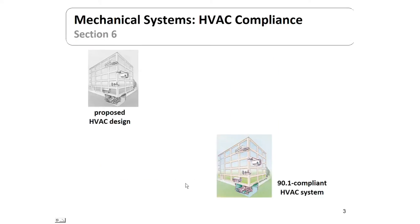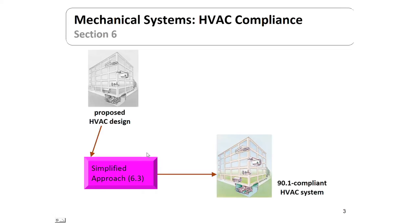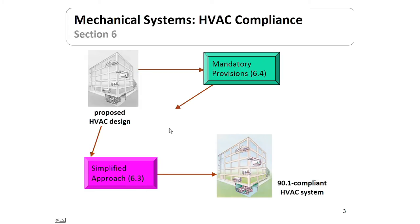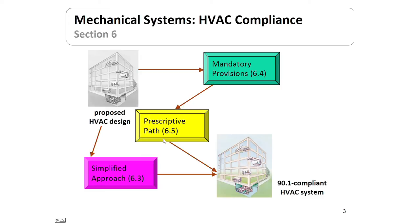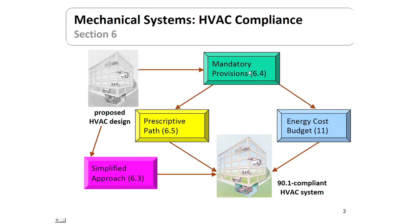The mechanical system compliance may look a little more complex than the others we've gone through. We're trying to get from a proposed design to a 90.1 compliant HVAC system. We can go through a simplified approach, which happens to be section 6.3, or we can take the more complicated route of going through the mandatory provisions, through the prescriptive section, onto compliance. Failing that, we can always use the backup method — the energy cost budget — to reach compliance.